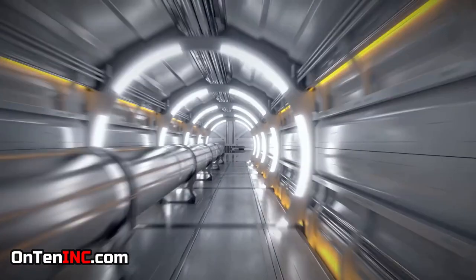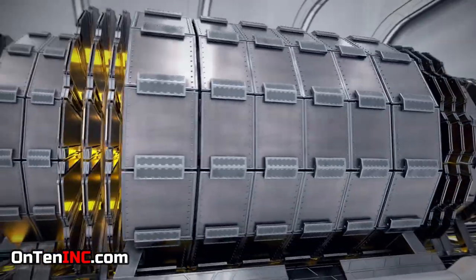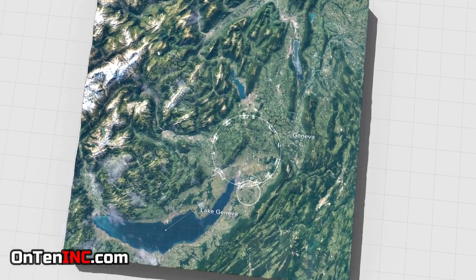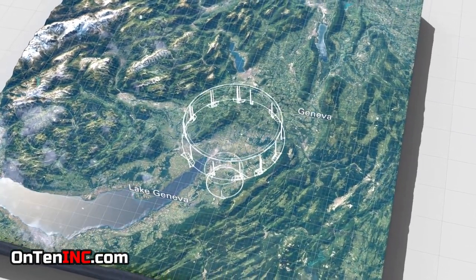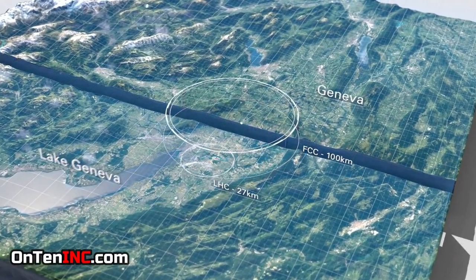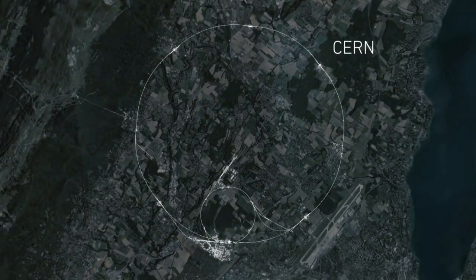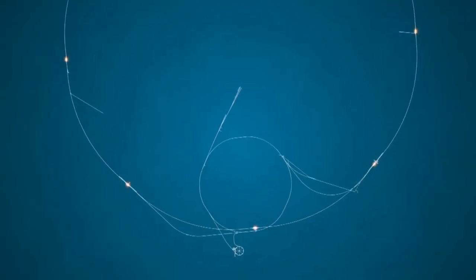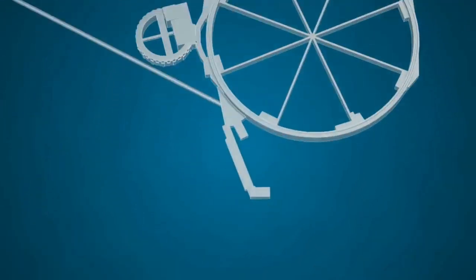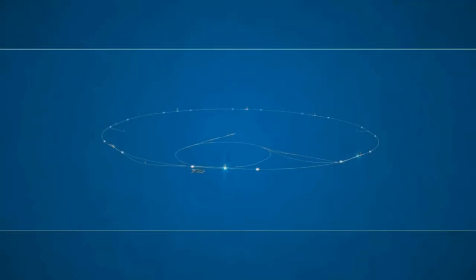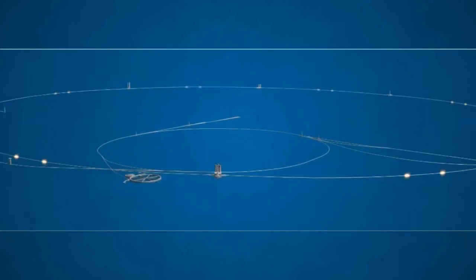This place is run under the European Organization for Nuclear Research, also known as CERN, but LHC is located right here on the border of Switzerland and France. This place is basically a circular tunnel that's underground and its circumference is 27 kilometers. In the tunnel there are two vacuum pipes running through it and in some places they join together.